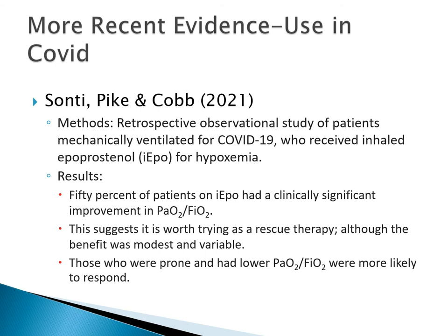Regarding Flolan's use in patients with severe hypoxemia secondary to COVID-19: in 2021, Santi and others published a retrospective observational study of patients on mechanical ventilation with moderate to severe hypoxemia secondary to ARDS. Fifty percent of patients on inhaled Flolan had clinically significant improvement in P-to-F ratios, suggesting it is worthwhile as a rescue therapy — though the benefit was modest and variable. Those who were proned and received Flolan had an even more profound response. A team at Massachusetts General Hospital looked at both inhaled nitric oxide and Flolan in patients with respiratory failure secondary to COVID-19 on mechanical ventilation.